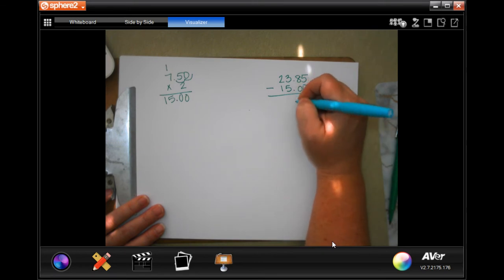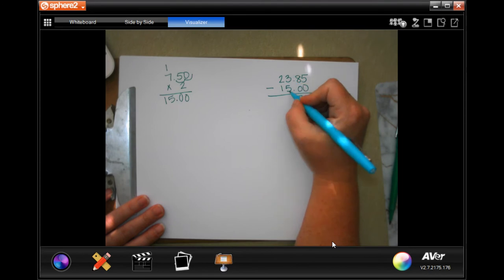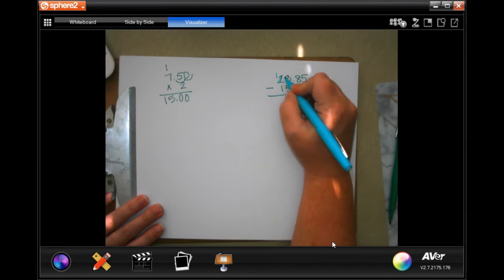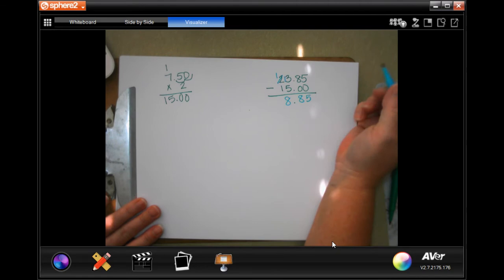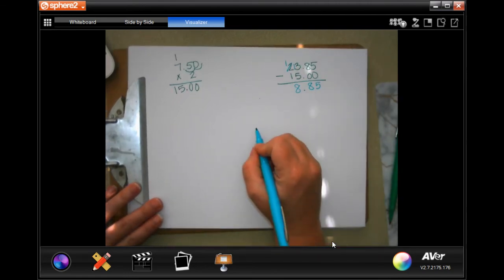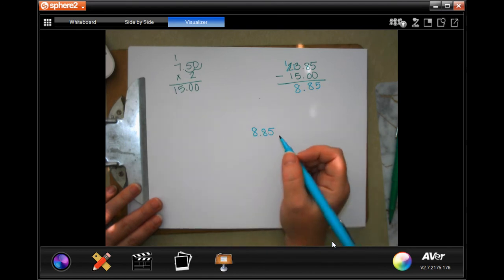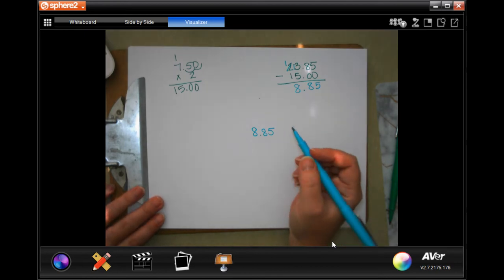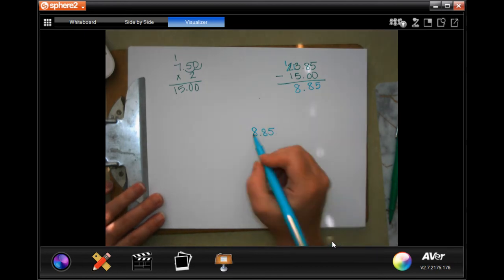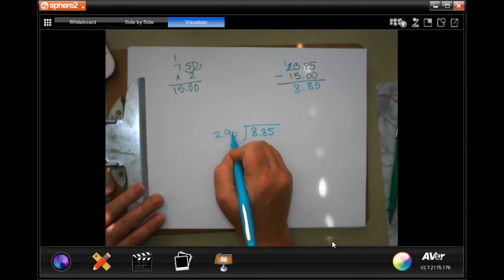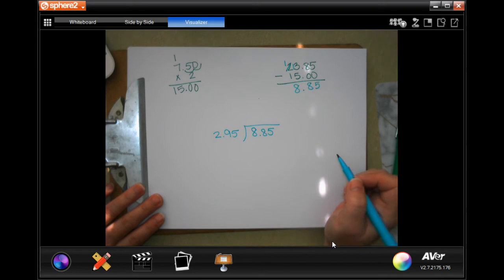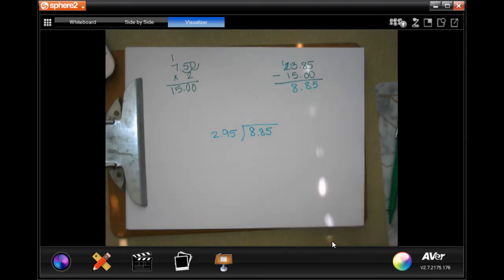So, drop my decimal. 5 take away 0 is 5. 8 take away 0 is 8. 3 cannot take away 5, so I need to borrow 1. 13 take away 5 is 8. So, this says $8.85 was what was left over from paying for the lanes. Now, for a member, it costs $2.95 per shoe rental.